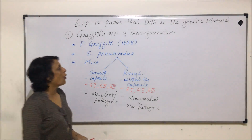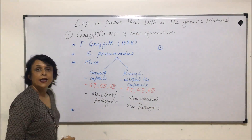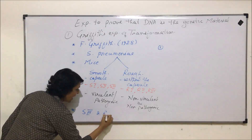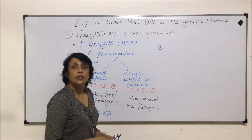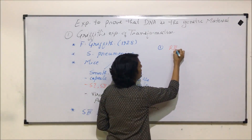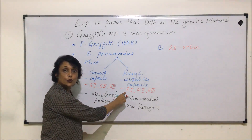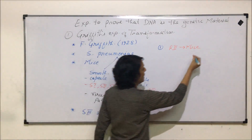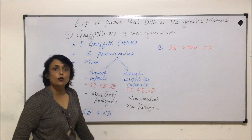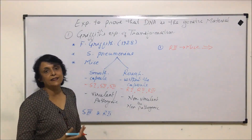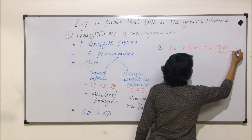Now, regarding the experiment: Griffith chose S3 and R2. He performed experiments with many strains, but the final results came from these. In experiment one, R2 was injected into mice. Since the rough strain is non-virulent and non-pathogenic, the expected result was that the mice would survive — and as expected, the mice survived.